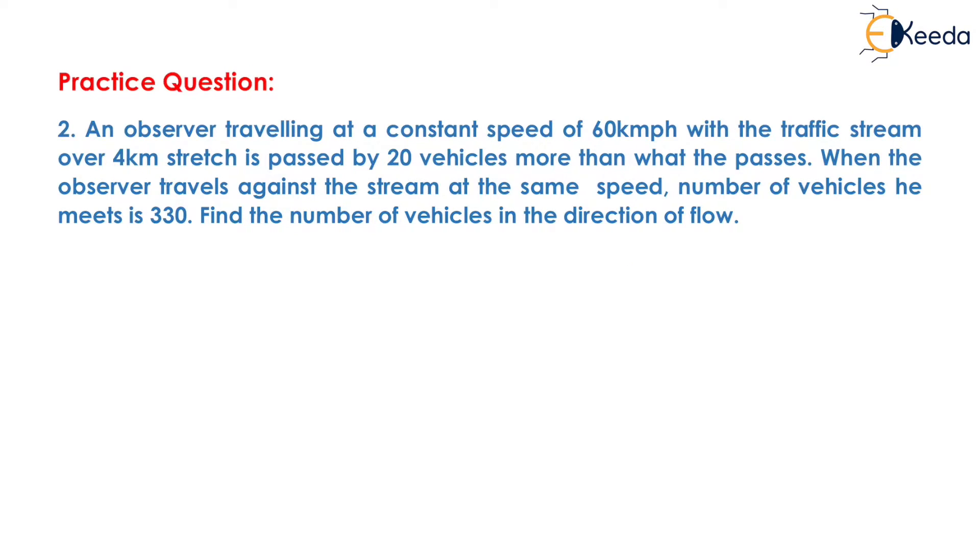Question is given as: An observer travelling at a constant speed of 60 km per hour with the traffic stream over 4 km stretch is passed by 20 vehicles more than what he passes. When the observer travels against the stream at the same speed, the number of vehicles he meets is 330. Find the number of vehicles in the direction of flow.